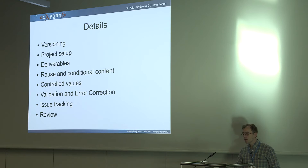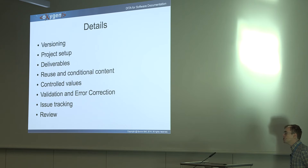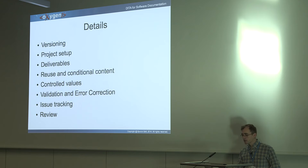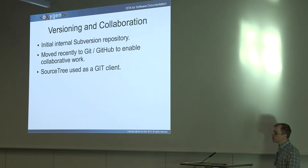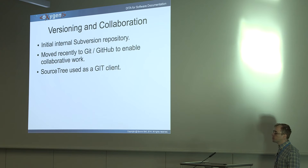The benefit of the Jenkins server is that once somebody commits changes to the user's manual, Jenkins automatically rebuilds all the user's manuals within 5 to 10 minutes so reviewers can review in DITA content or open the rebuilt manuals to look at changes. We also run a series of automated tests each night on that DITA map to check for various consistency problems. Today we'll cover versioning, how we set up our project, how we obtain our deliverables, reuse, validation and error correction, issue tracking, and how we review documentation. Initially we kept our user's manuals in a Subversion repository, but we recently moved to GitHub, using a private GitHub account for both internal and external occasional contributors.